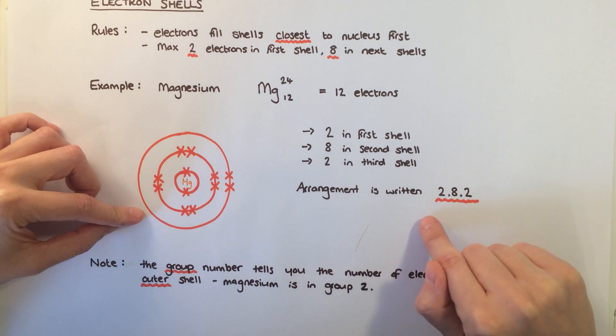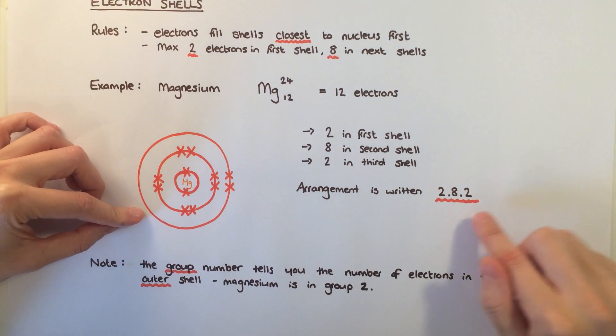As well as drawing it on a diagram like this, we can also write the arrangement of electrons numerically as 2.8.2.